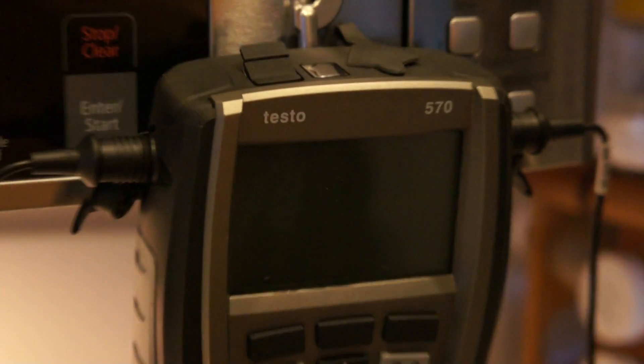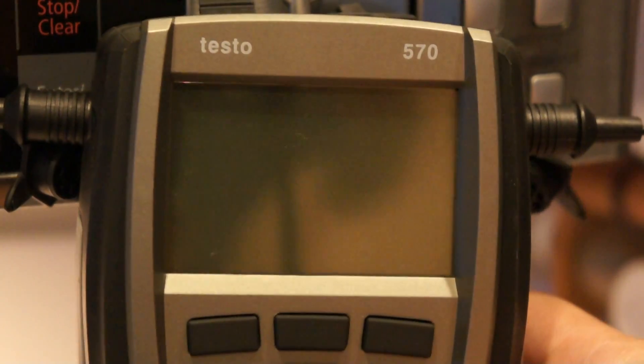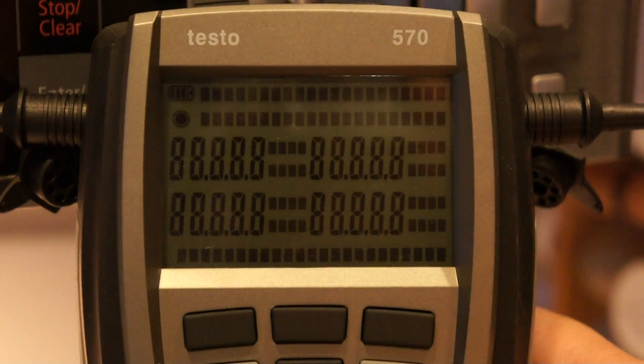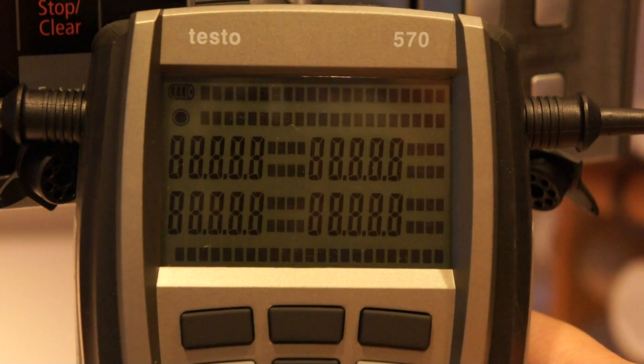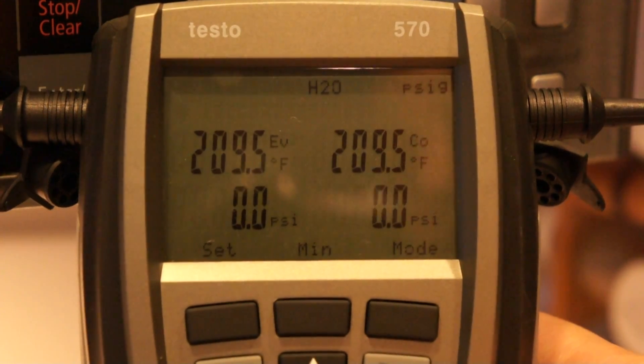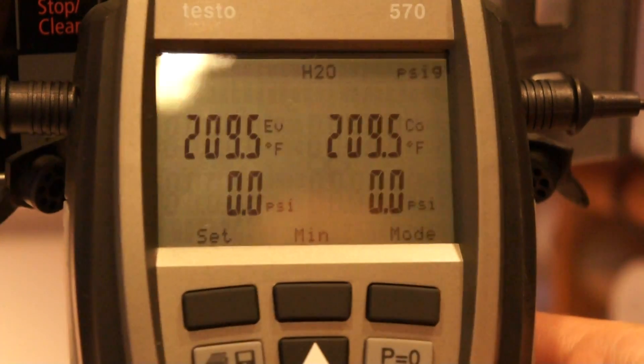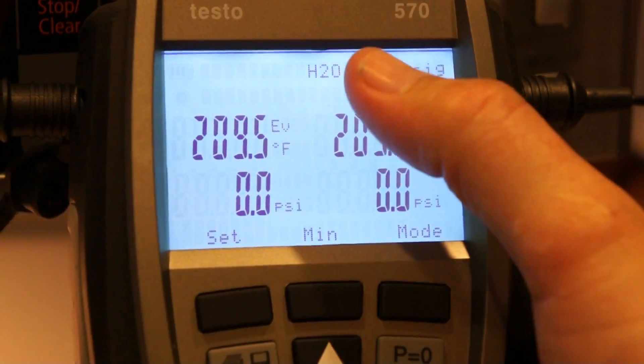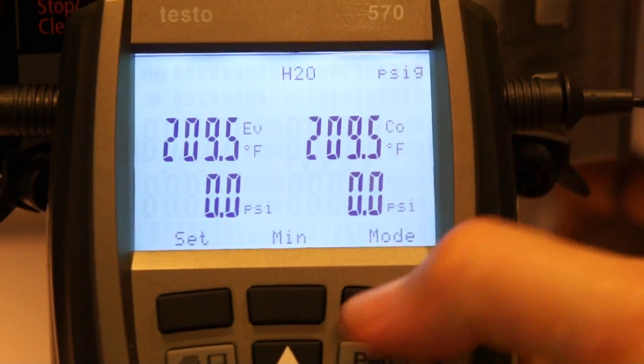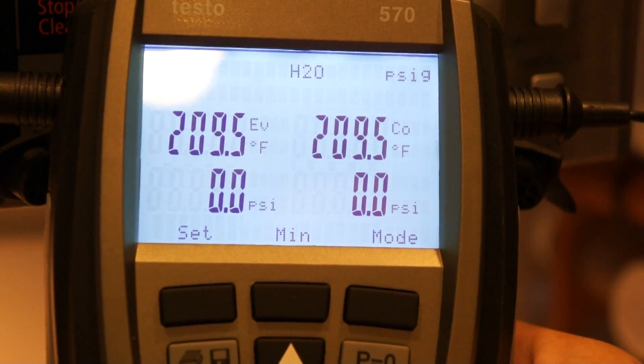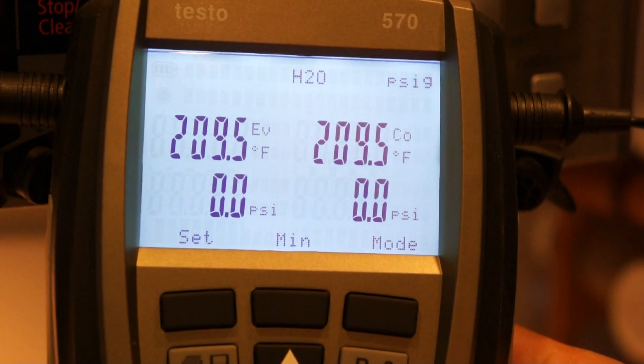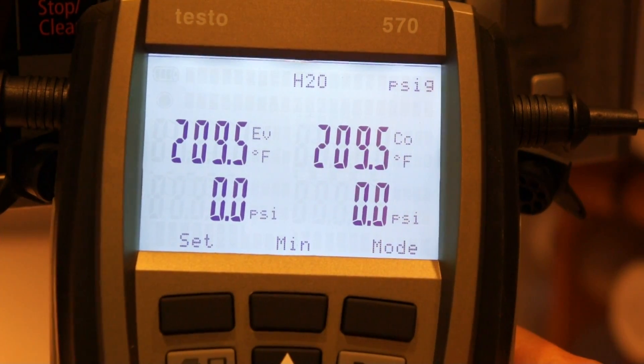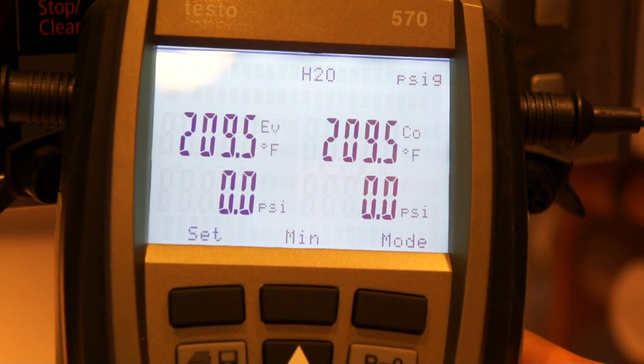I'm going to go ahead and zoom in on the instrument so you guys can see it here. I'm going to power it up. When you power up a 570 it actually goes through an internal configuration and it looks at the atmospheric pressure. So when we power it up, you can see, turn on the backlight here, that we have refrigerants that is water and it says that boiling and condensing is 209.5, not 212, and that's because we're at 1,062 feet above sea level and that changes the boiling point of water.